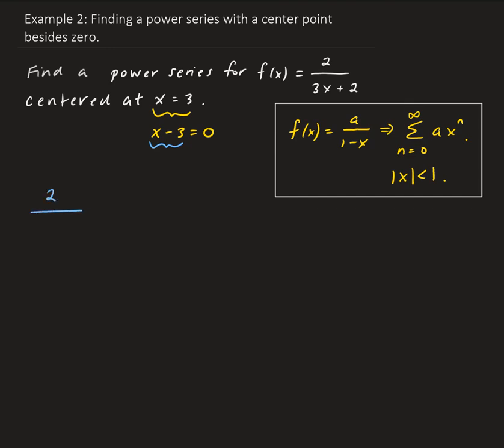This is going to give us 2 divided by — I'm going to write it this way — 2 first, and then 3 times x minus 3. We're doing a shifting, but we have to keep in mind the original function we're given. By putting x minus 3 into the variable x, we get a factor of minus 9, since 3 times x minus 3 gives us an extra factor of negative 9. So to preserve the original function, we need to add a 9 here.